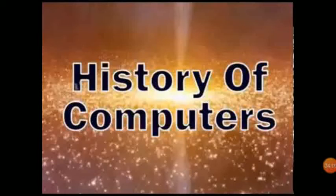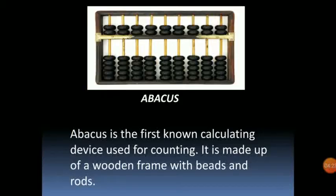Now we come to the chapter — Evolution of Computers. In this chapter we will study the history of computers, including device names and inventor names. The first one is Abacus. Abacus is the first known calculating device, used for counting. It is made of beads and rods and is mainly used for addition, subtraction, multiplication, and division.